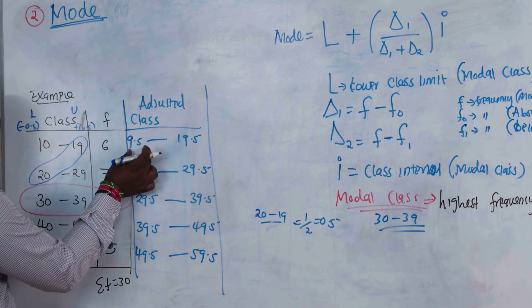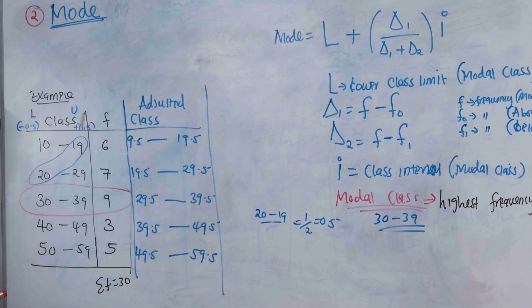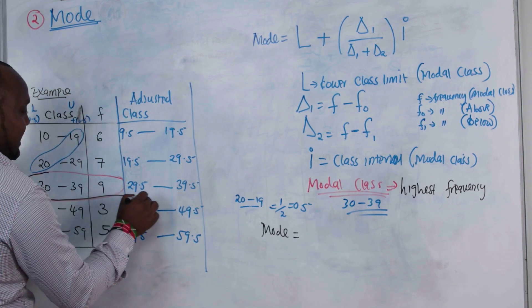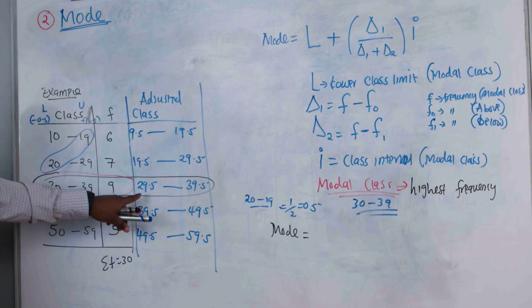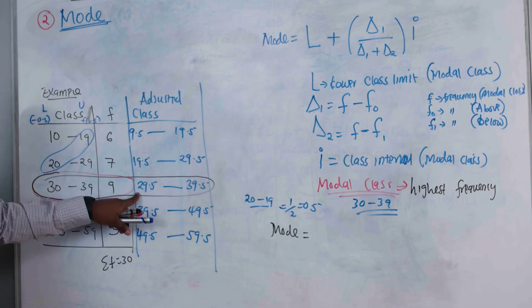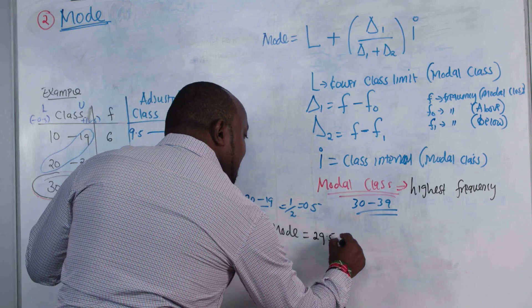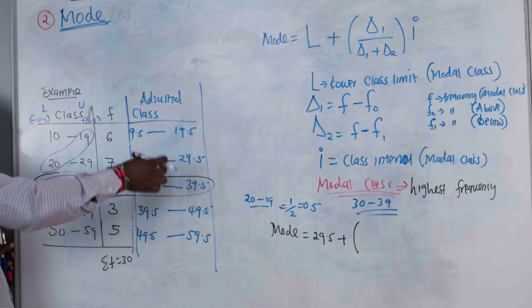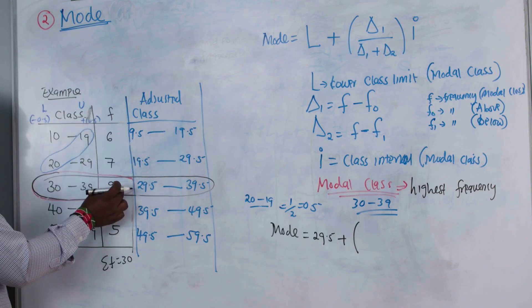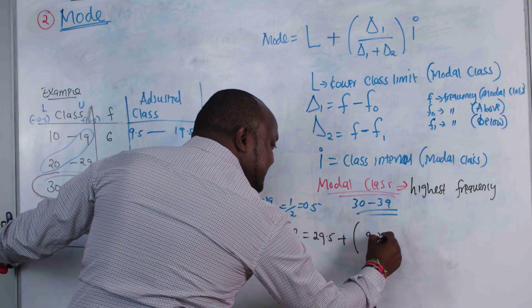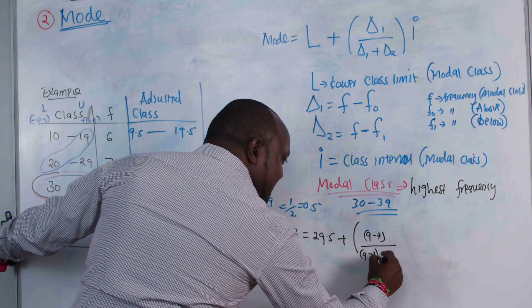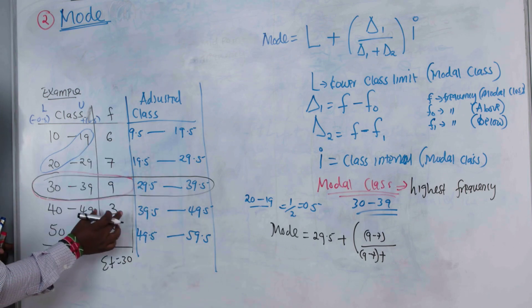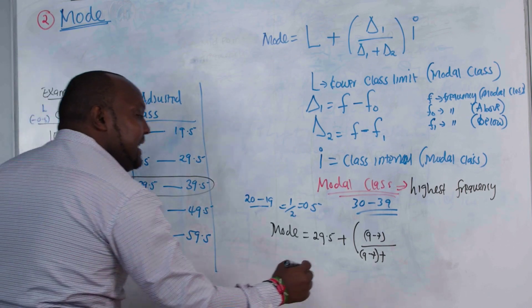Now applying the formula: our modal class is 30–39, so the lower class limit L is 29.5. Δ1 = frequency of modal class minus frequency of previous class = 9 − 7 = 2. Δ2 = frequency of modal class minus frequency of the class below = 9 − 3 = 6.